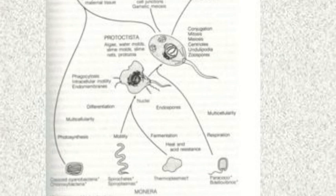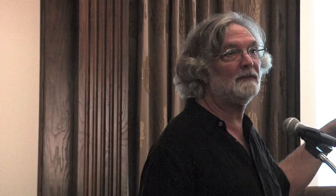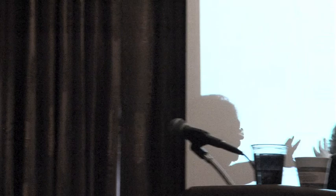Lynn argued something different — she puts spirochetes first, that maybe the cytoskeleton came first. The reason for that also was the new kingdom proposal of the Archezoa by Cavalier-Smith — these were organisms like Giardia that seemed to be ancient and lacked mitochondria. So the thought was, maybe there were organisms before mitochondria. Today, whether or not there are organisms that truly lack mitochondria is highly debatable.